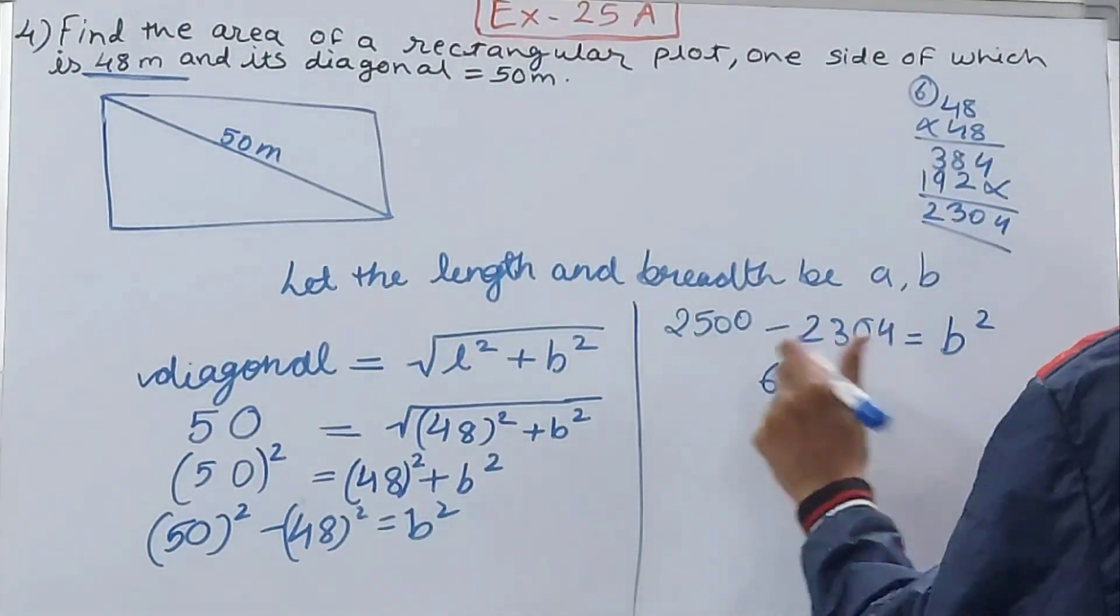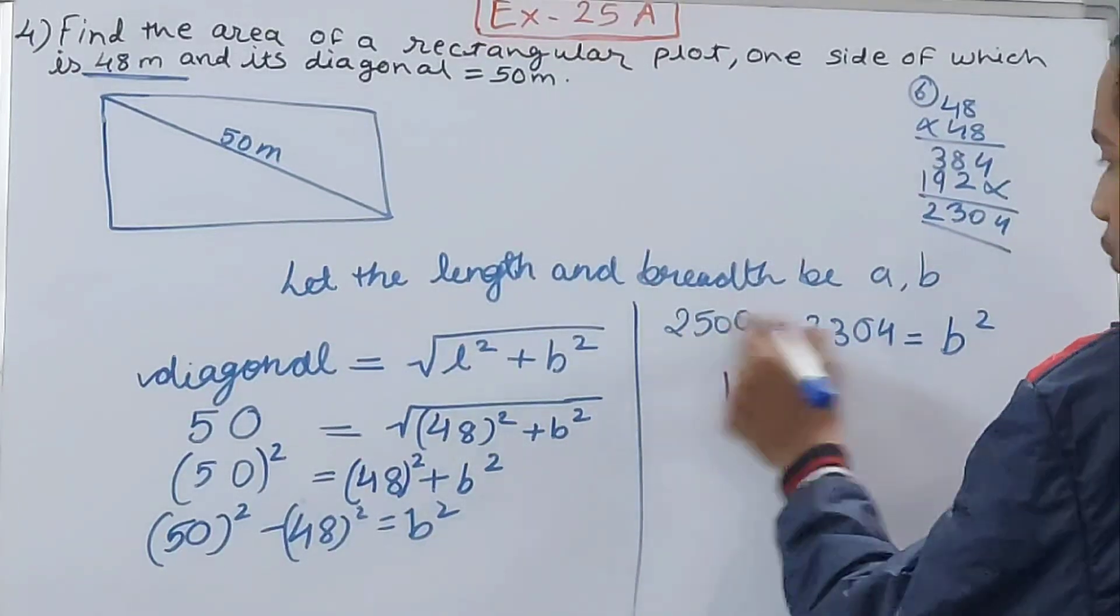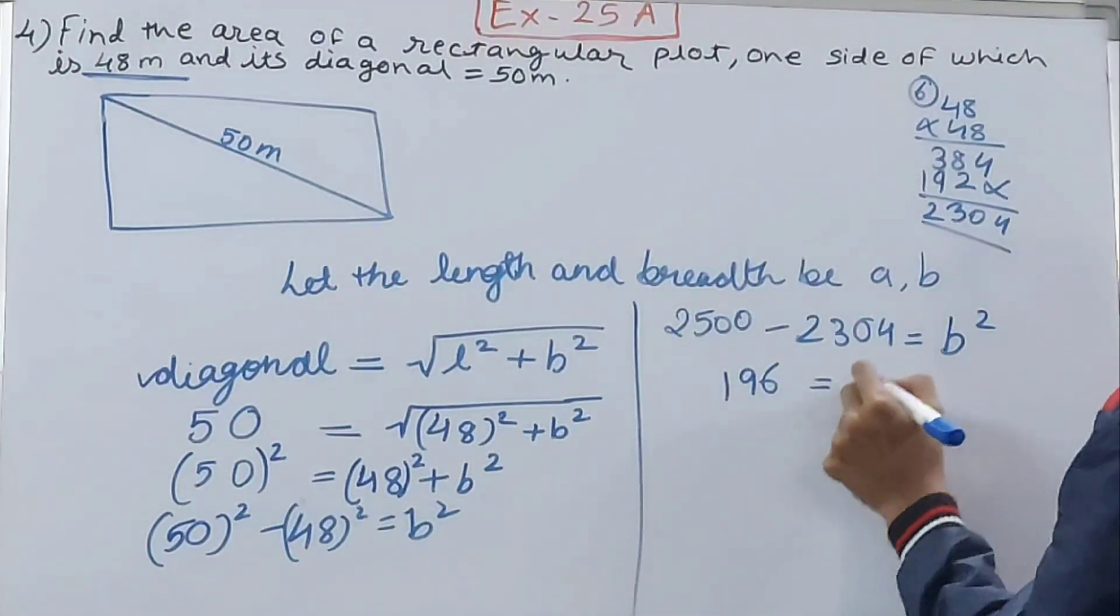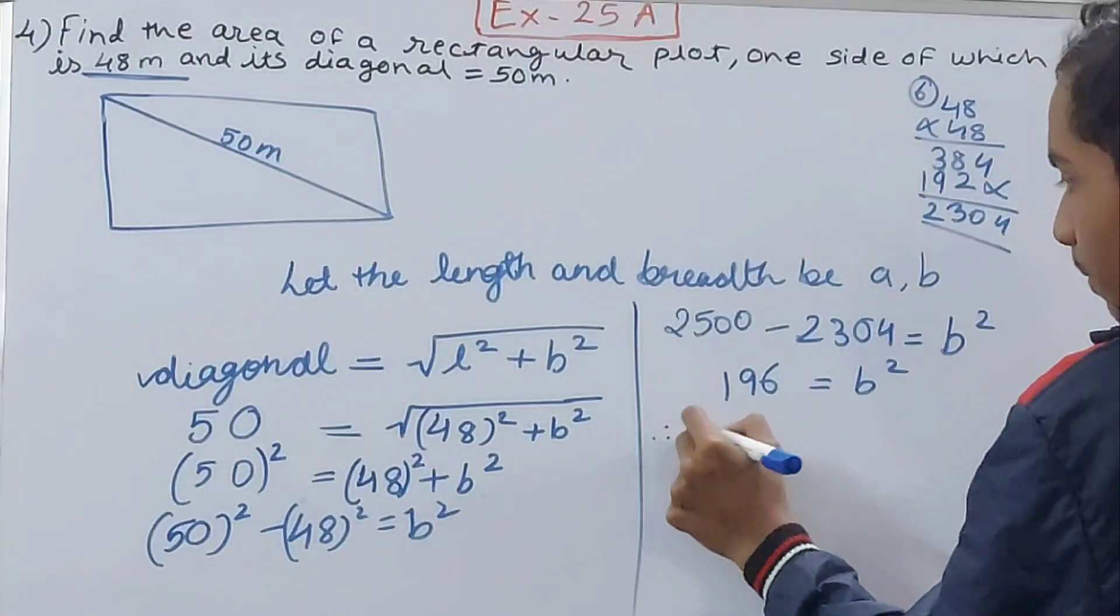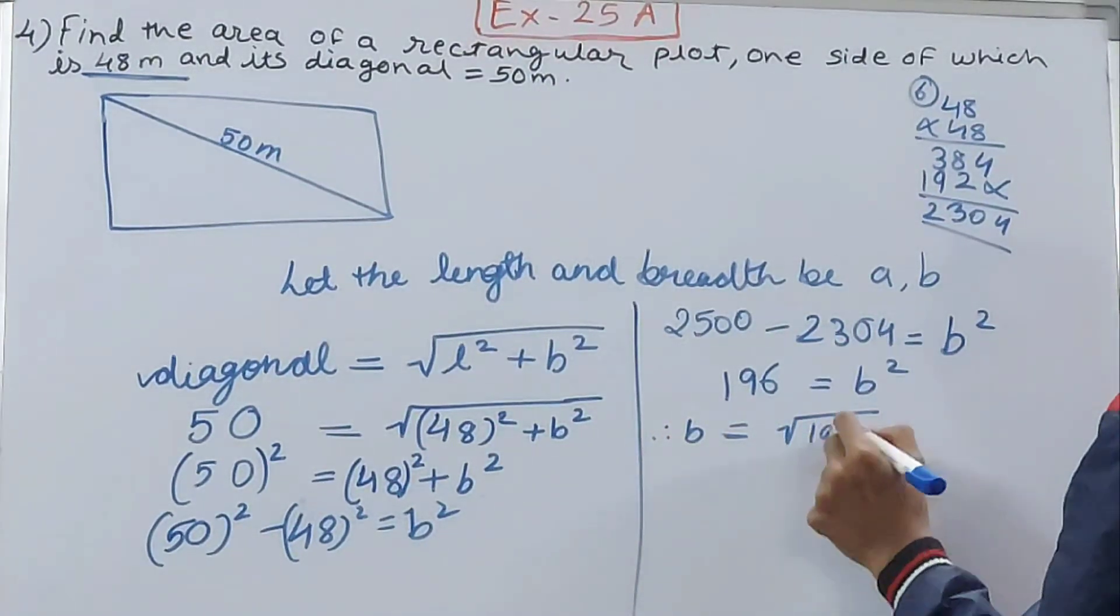Now let's see what will the value be. 10 minus 4 is 6, 9 minus 0 is 9, 4 minus 3 is 1, 2 minus 2 is 0. So 196 is equal to b². Therefore b is equal to the root of 196.